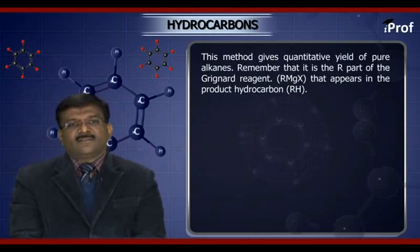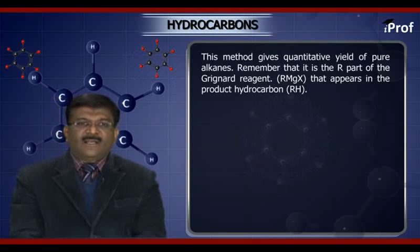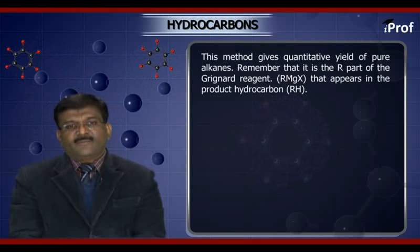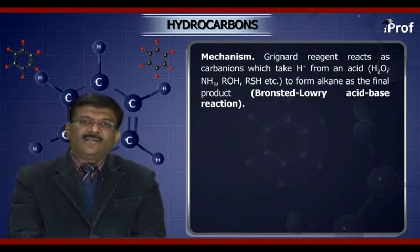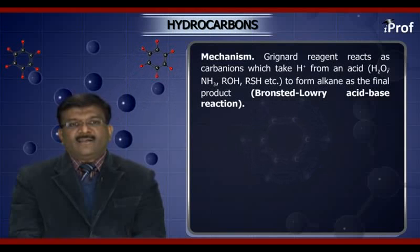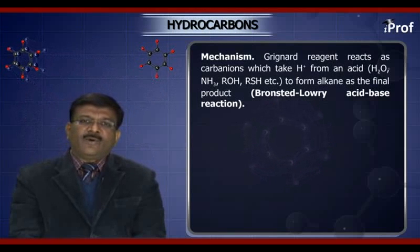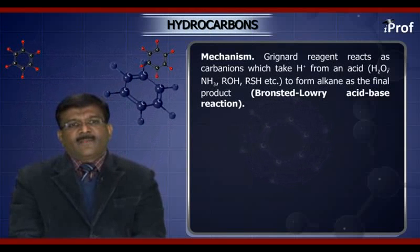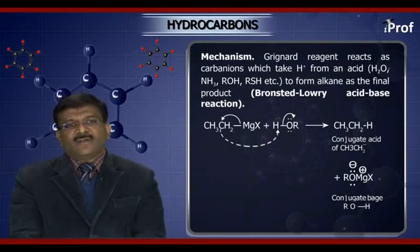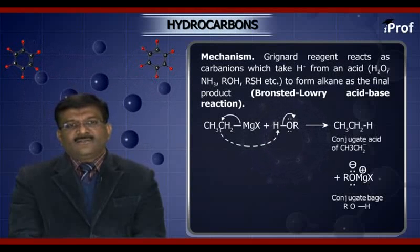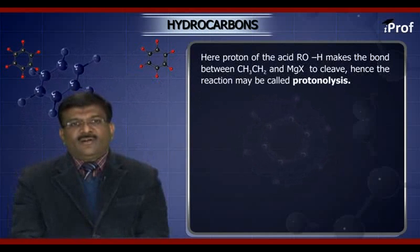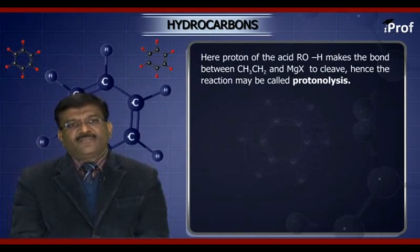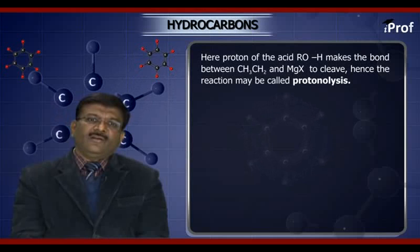Remember that it is the alkyl part of the Grignard reagent — that is, R in RMgX — that appears in the product hydrocarbon. The mechanism: the Grignard reagent acts as a carbanion, which takes a hydrogen ion from an acid such as water, NH₃, ROH, or RSH, to form the alkane as the final product. This reaction is a type of Brønsted-Lowry acid-base reaction. The proton of the acid ROH causes the bond between the alkyl group and MgX to cleave; hence the reaction may be called protonolysis.